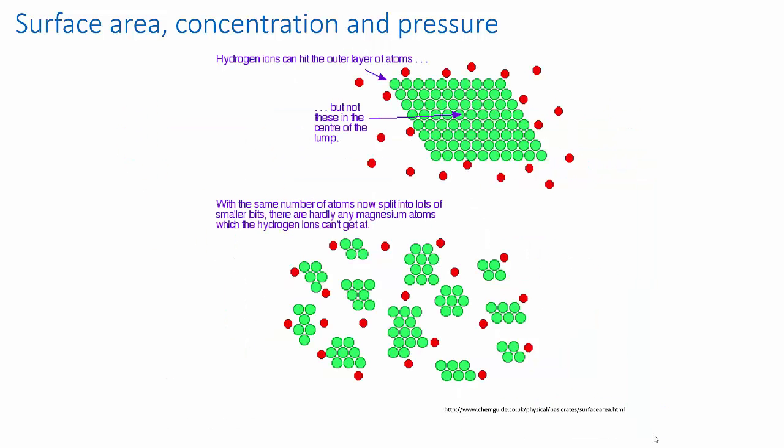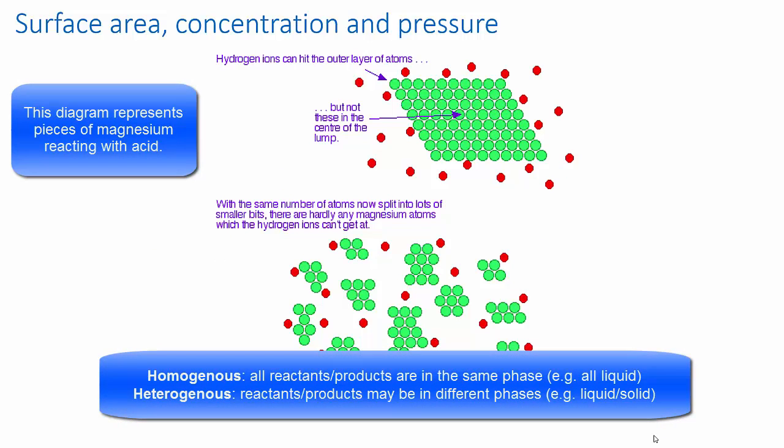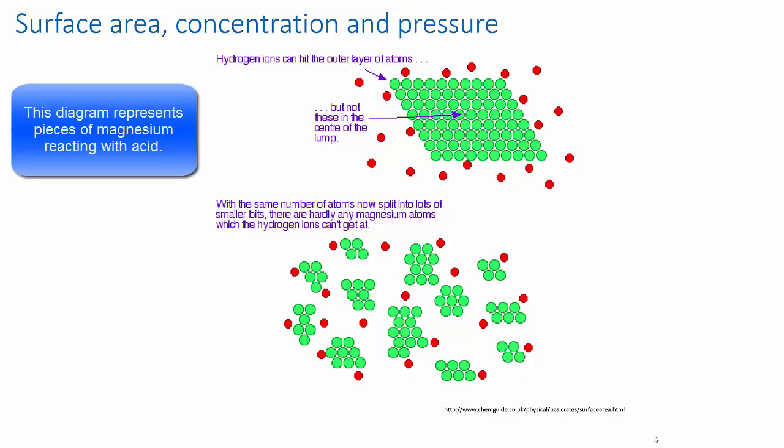Just as an aside, we should make it explicit why increasing the surface area in a heterogeneous reaction has the same effect as increasing concentration in a homogeneous reaction. If the reactants are uniformly dispersed in a single homogeneous solution, the number of collisions per unit time depends on concentration and temperature.